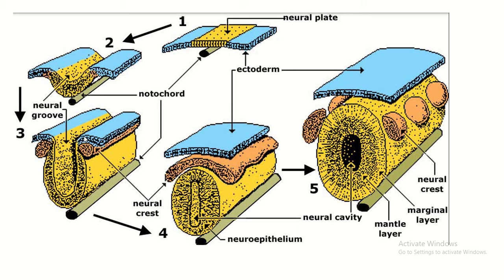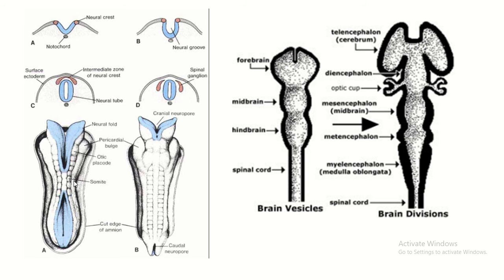The rest of the neural groove starts to close — the two sides come closer and successfully unite to form the neural tube. The neural crest is detached, and the rest of the ectoderm also detaches from the neural tube and forms the surface ectoderm.